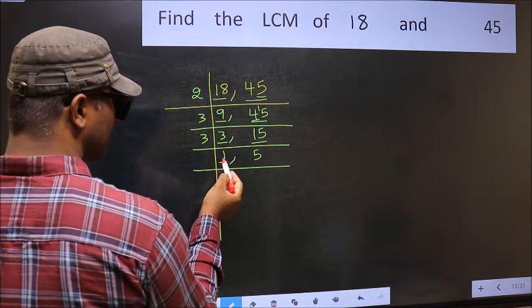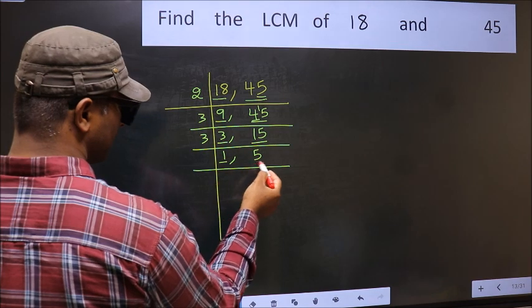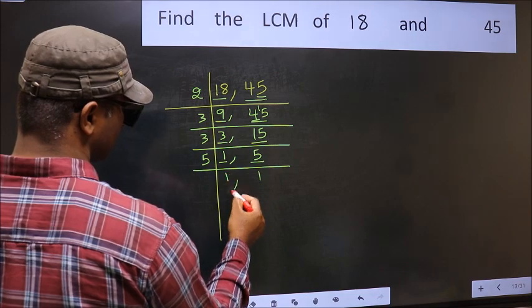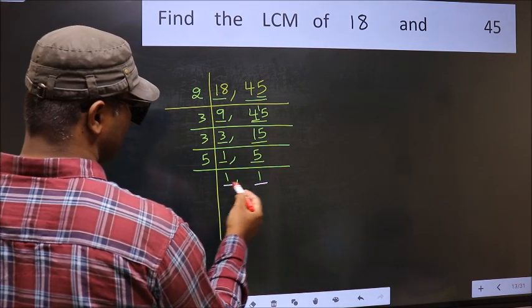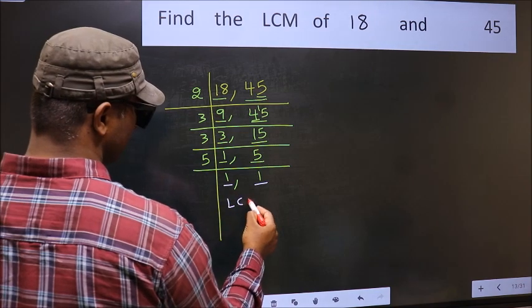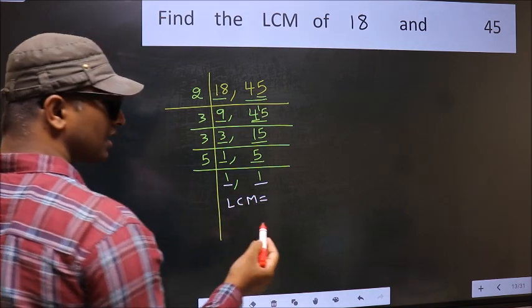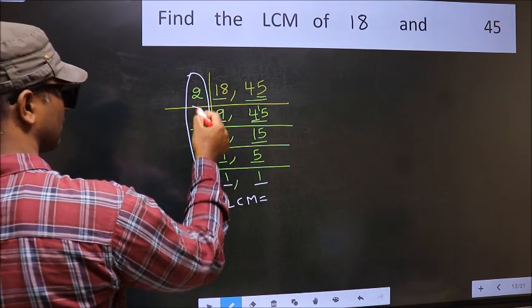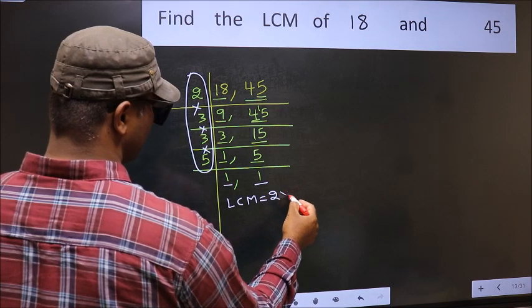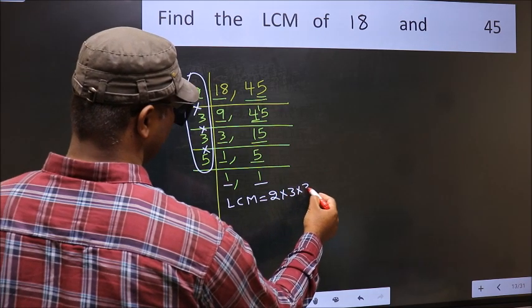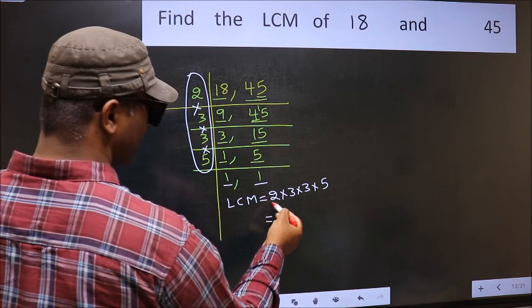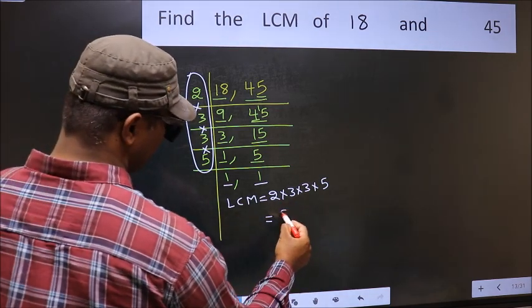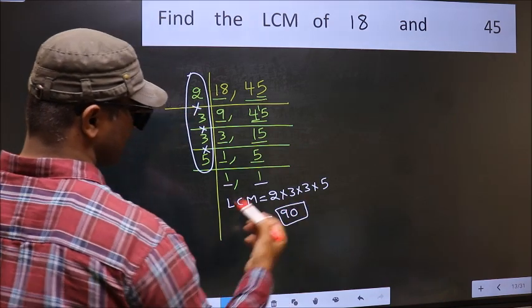Now we got 1 here. So focus on the next number, 5. 5 is a prime number. So 5 once is 5. We got 1 in both places. So our LCM is the product of these numbers. That is 2 times 3 times 3 times 5. When we multiply these numbers, we get 90 as our LCM.